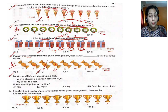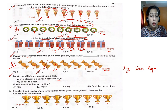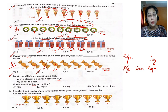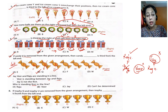Question 7: J, V, and Raju are standing in a line. V is standing between J and Raju. J is not the first. Since V is in the middle, V can't be first. J is also not first. The only remaining possibility is Raju. So the answer for question 7 is A — Raju is standing first.